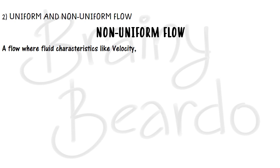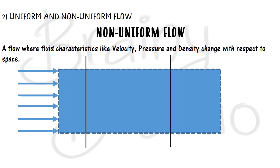Non-uniform flow is a flow where characteristics like velocity, temperature, pressure, and density change with respect to position or space. Taking two different sections: if at the first section velocity is 10 m/s and density is 1000 kg/m³, but in the second section at least any one parameter has changed, such a flow is called non-uniform flow — even one parameter changing is sufficient.